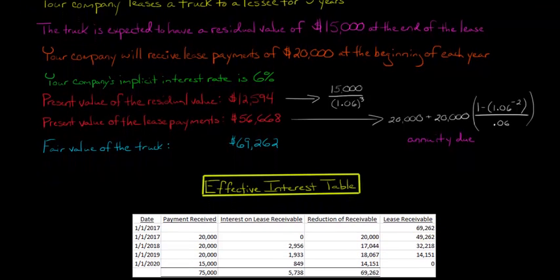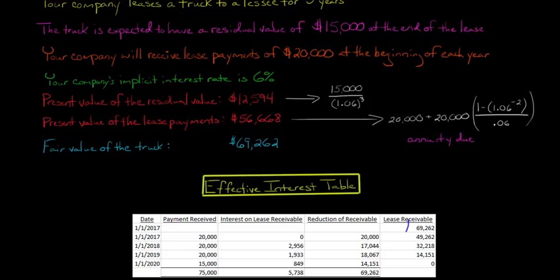It can get more complicated when we consider whether the residual value is guaranteed or unguaranteed — I'll make a separate video on that. For now, let's assume the lease receivable equals the present value of the residual value plus the present value of the lease payments, giving us an initial lease receivable of $69,262. On the balance sheet, this would be separated into current and non-current portions — current being what the firm expects to receive in the next year or operating cycle, and non-current being the remainder.